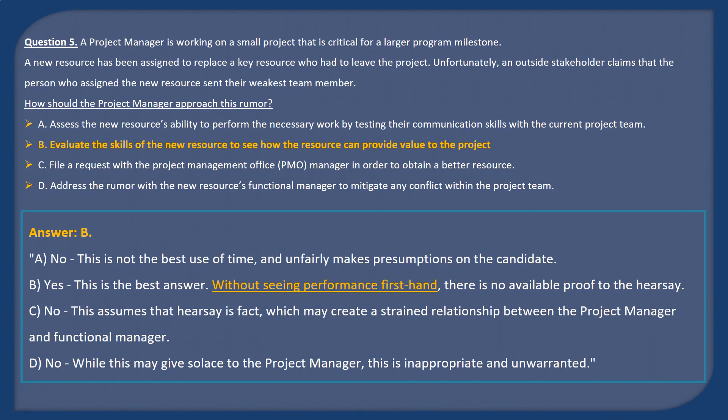Answer B. A: No — this is not the best use of time and unfairly makes presumptions on the candidate. B: Yes — this is the best answer. Without seeing performance firsthand, there is no available proof to the hearsay. C: No — this assumes that hearsay is fact, which may create a strained relationship between the project manager and functional manager. D: No — while this may give solace to the project manager, this is inappropriate and unwarranted.